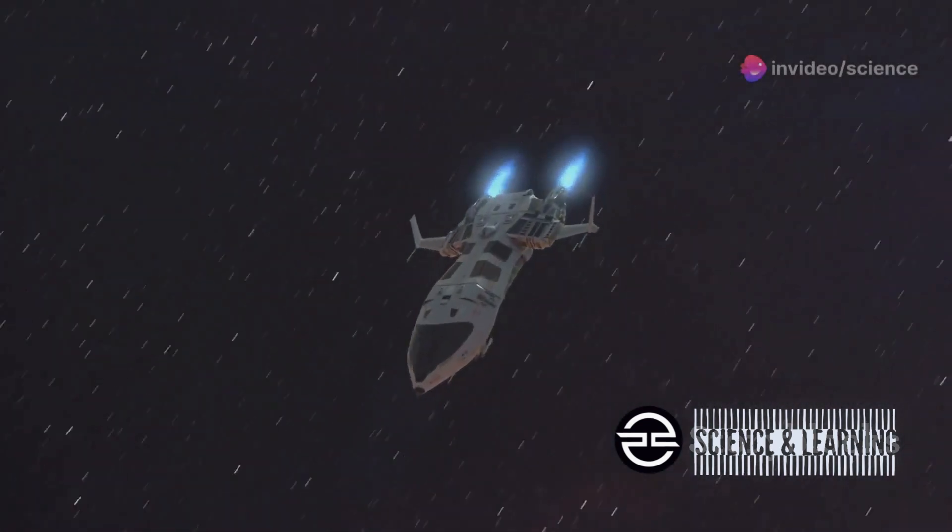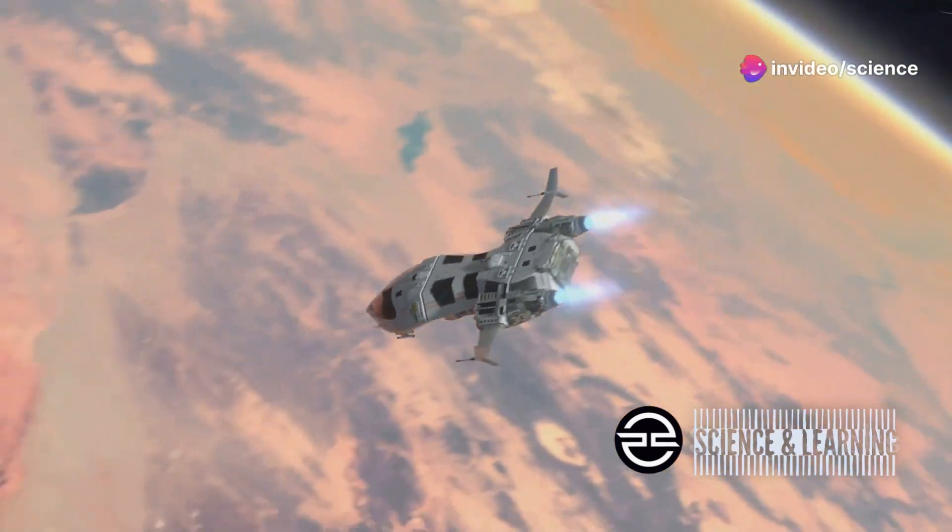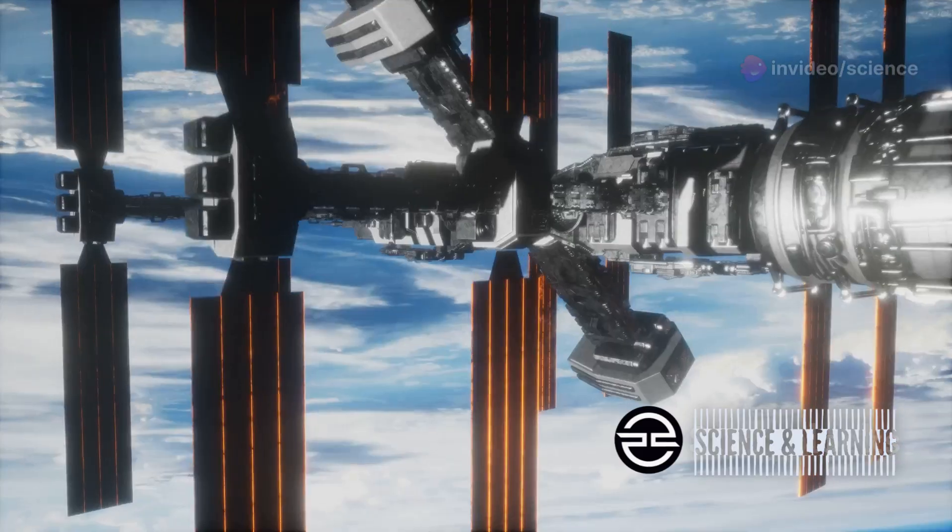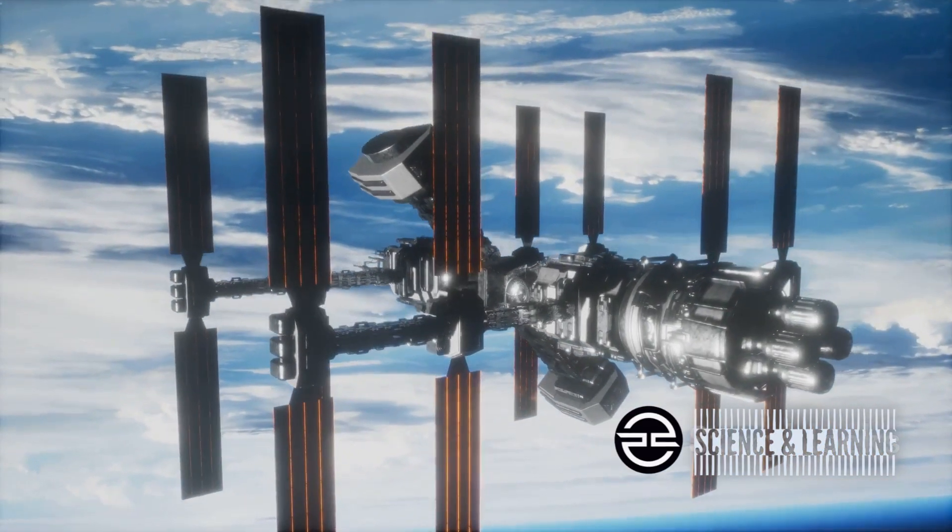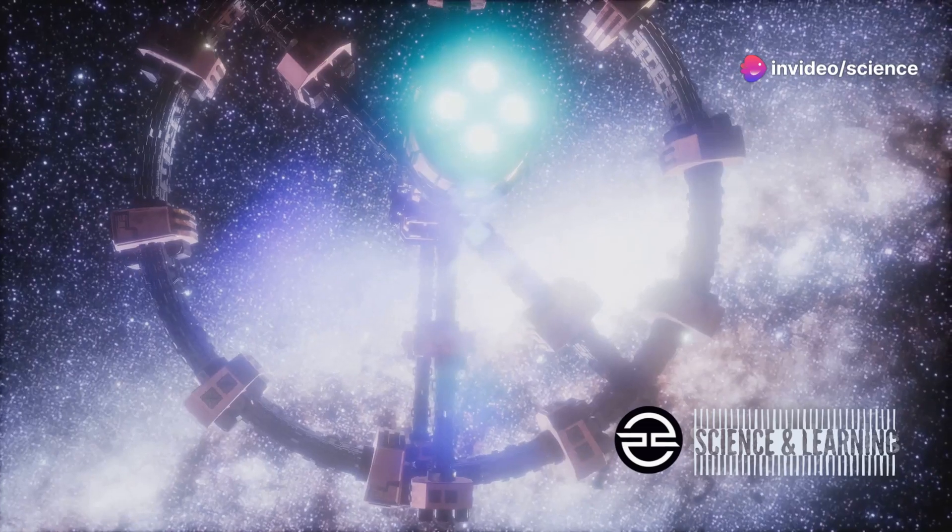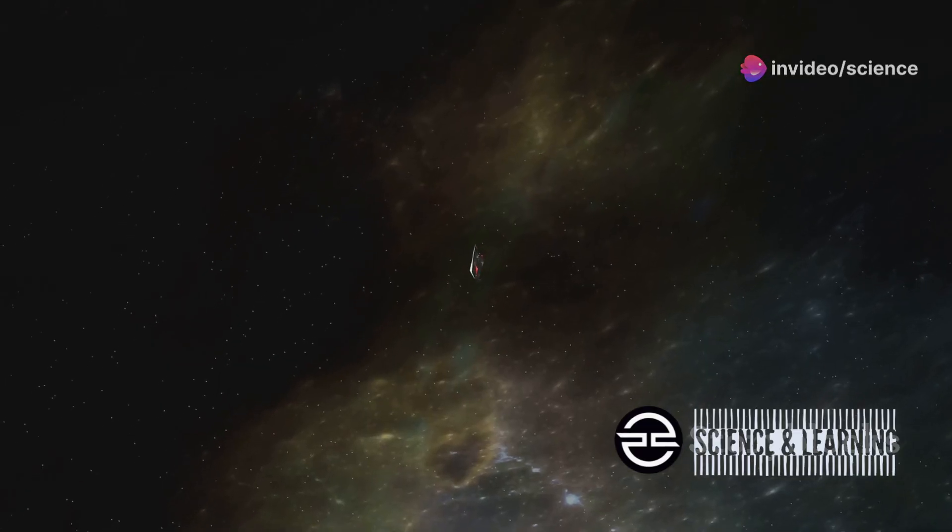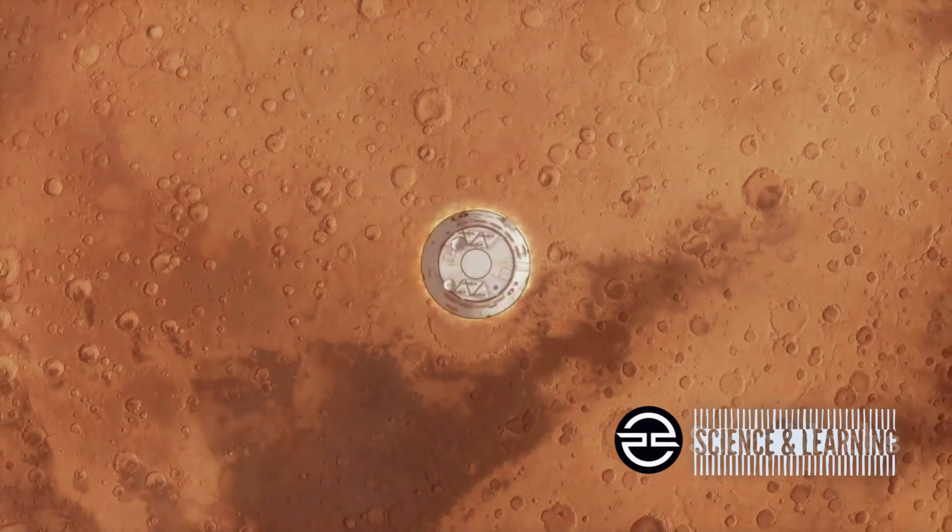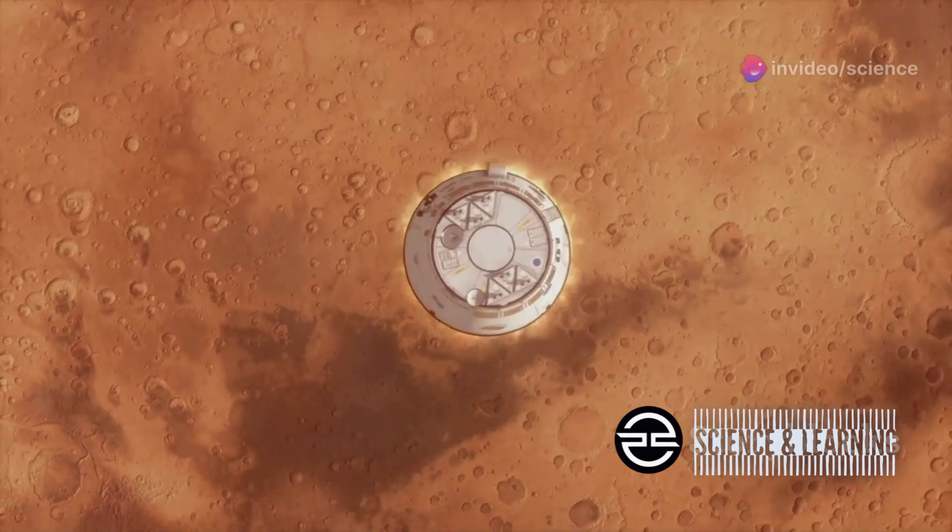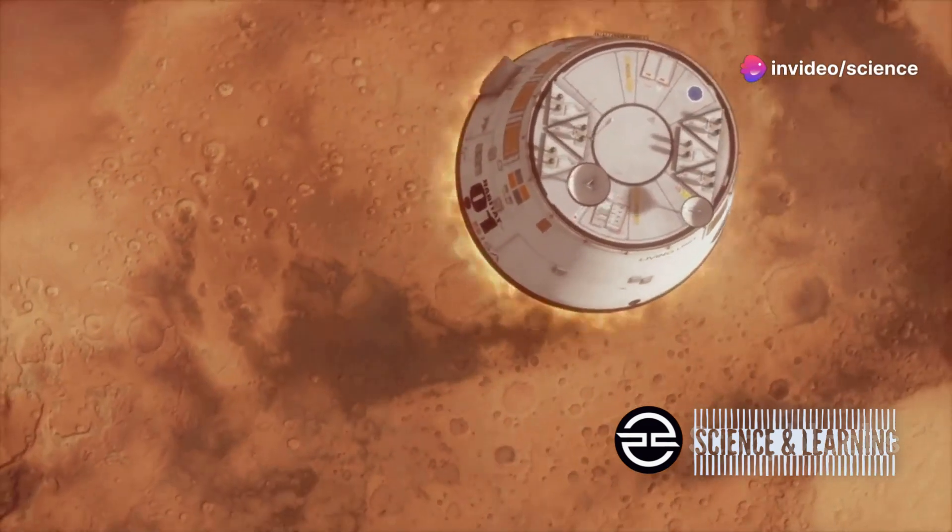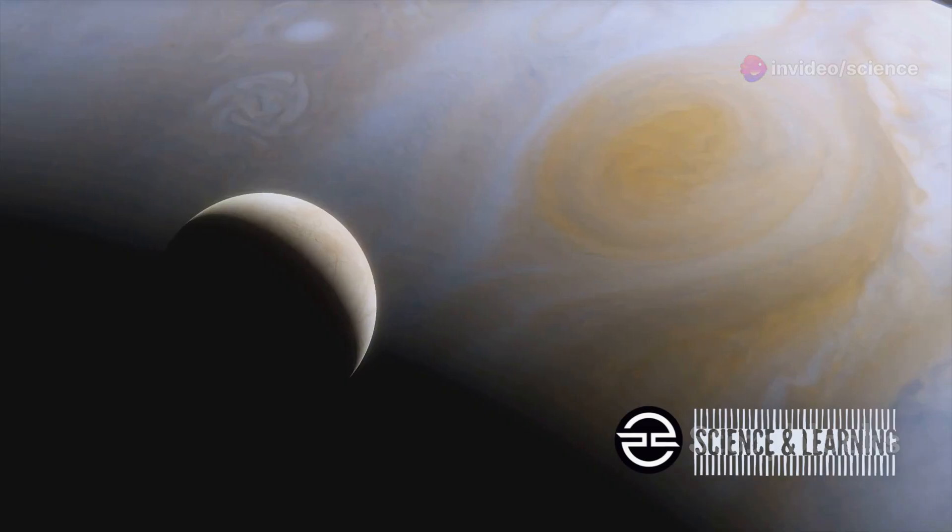The development of the pulsed plasma rocket is not just about reaching Mars, it's about pushing the boundaries of human exploration far beyond the red planet. This revolutionary technology has the potential to unlock the solar system, enabling us to reach destinations that were once considered unreachable within a human lifetime. Looking beyond our solar system, the dream of interstellar travel, once relegated to the realm of science fiction, could become a tangible possibility. The pulsed plasma rocket represents a pivotal step in our journey to becoming a truly space-faring civilization. Further out, the icy moons of Jupiter and Saturn, such as Europa and Enceladus, are believed to harbor vast subsurface oceans that might support life.